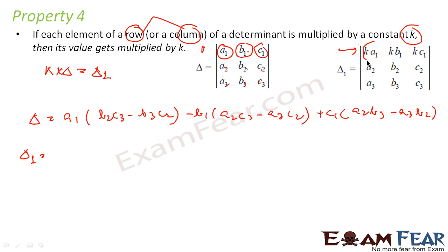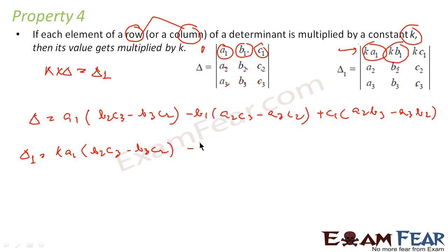Now for the second determinant, where row 1 has been multiplied by k, we take the first element ka1 into (b2c3 minus b3c2), then minus kb1 — we cannot take its column, so we take the four remaining elements to get (a2c3 minus a3c2).